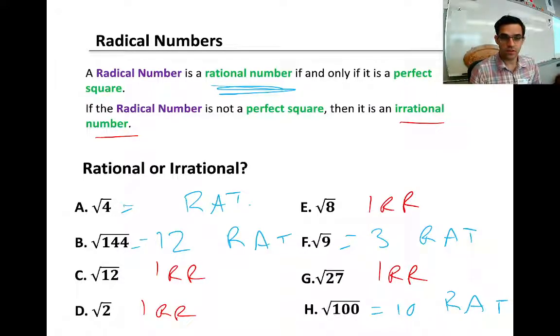So A, B, and F, and H, those are all rationals because 4 and 144 and 9 and 100 are perfect squares. So those can be written as nice whole numbers, and so those are rational. C, D, E, and G are irrational because the radicand, or the number under the radical, is not a perfect square.